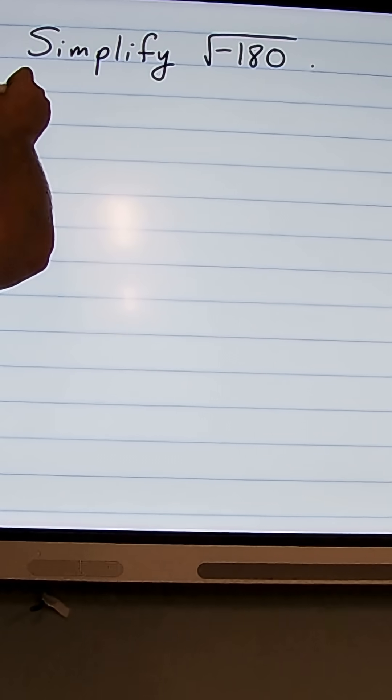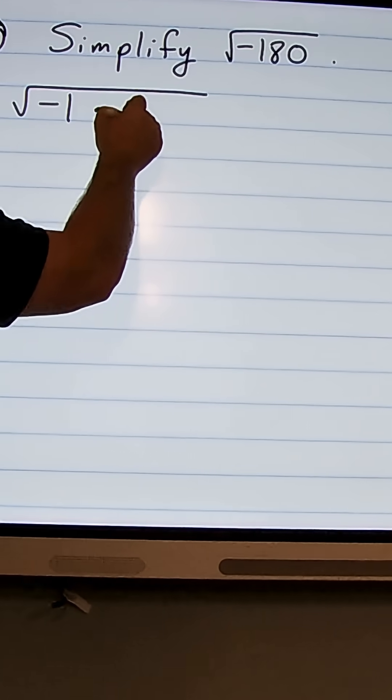In this problem we're going to simplify the square root of negative 180. So first off, we're going to factor out a negative 1. I'm going to rewrite this as negative 1 times 180.